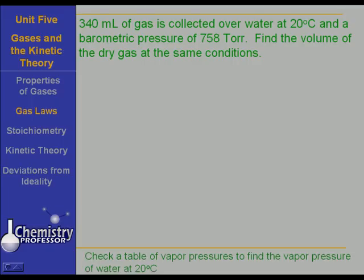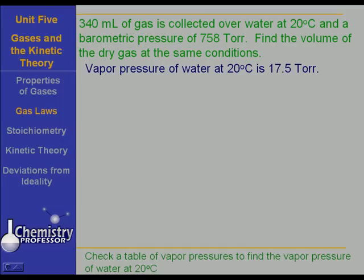So what we do is we check a table of vapor pressures to find the vapor pressure of water at 20 degrees Celsius. And the vapor pressure of water at 20 degrees Celsius we find to be 17.5 torr.